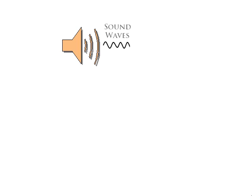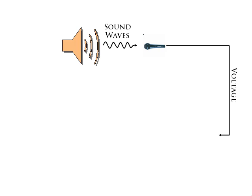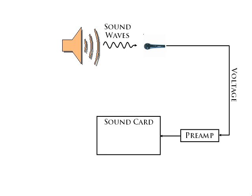Those sound waves travel forth and cause the membrane on your microphone to vibrate. This vibration is turned into an electrical signal voltage and is sent into a preamplifier chamber, and from there into your sound card, where it undergoes analog to digital conversion.